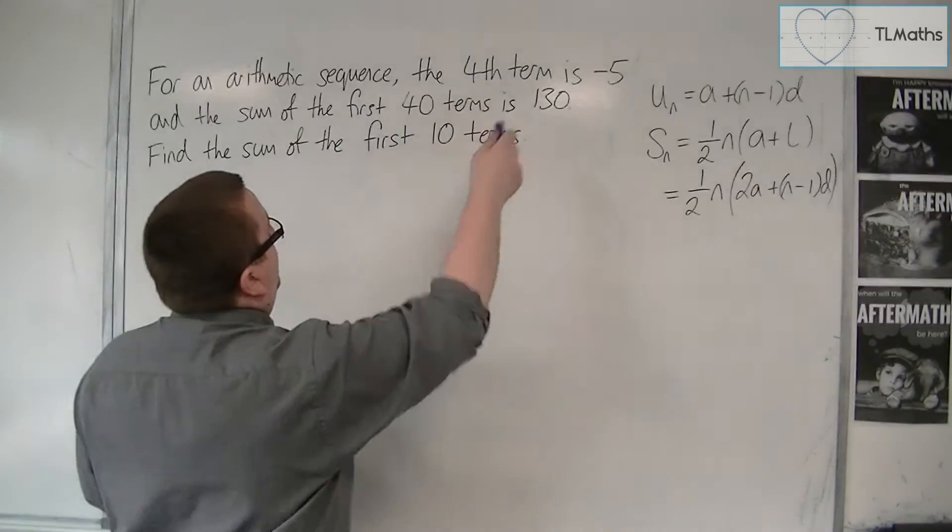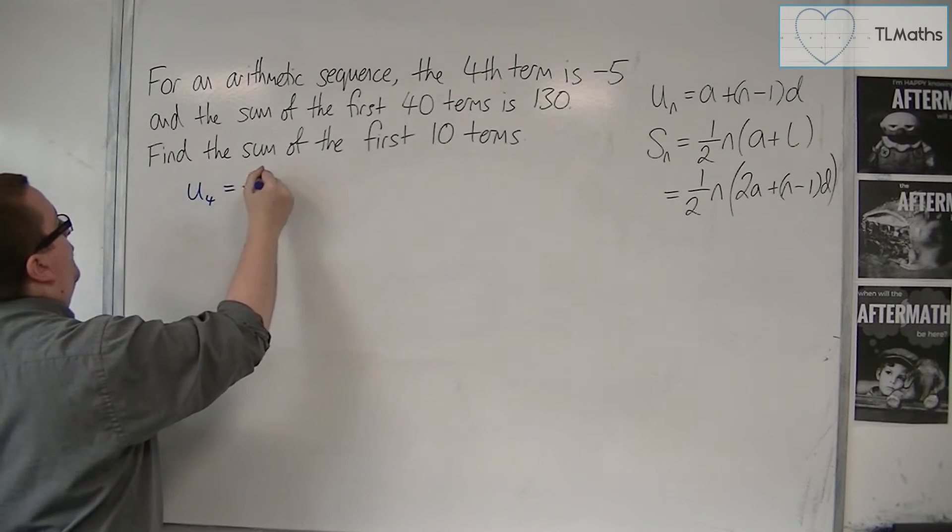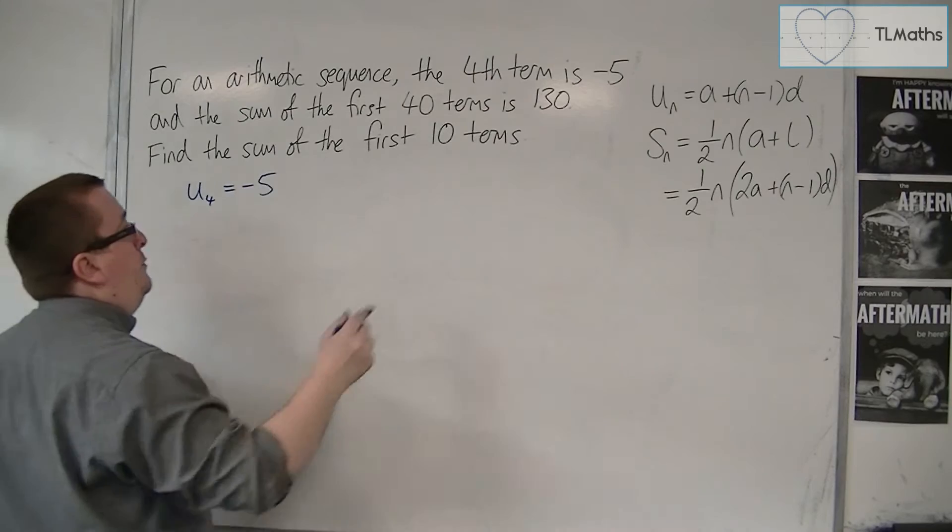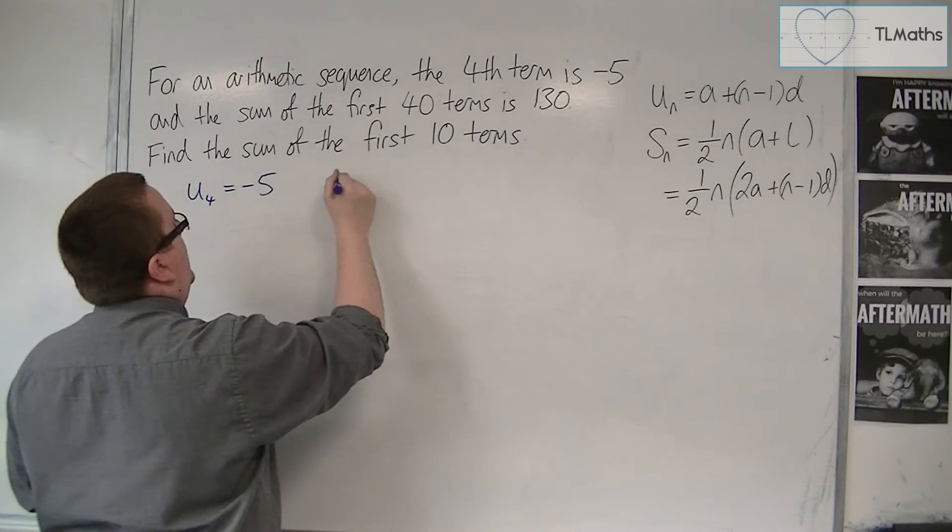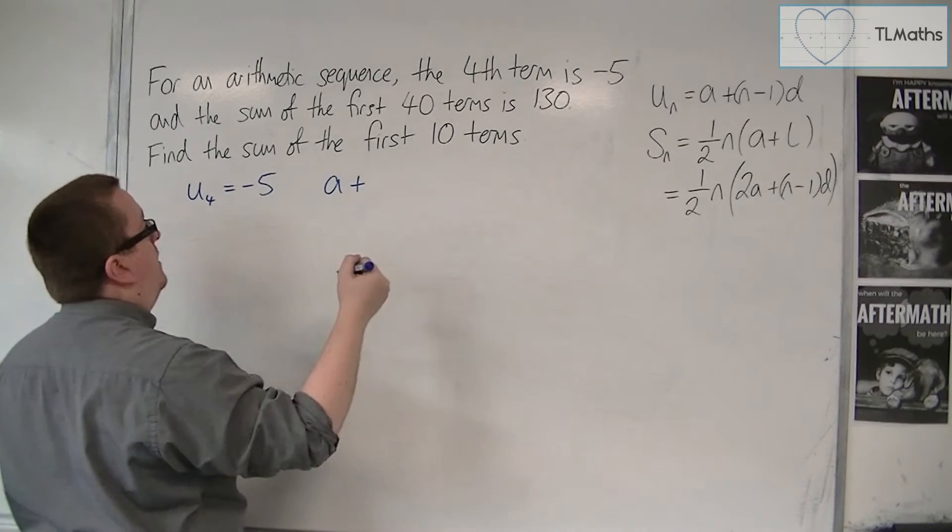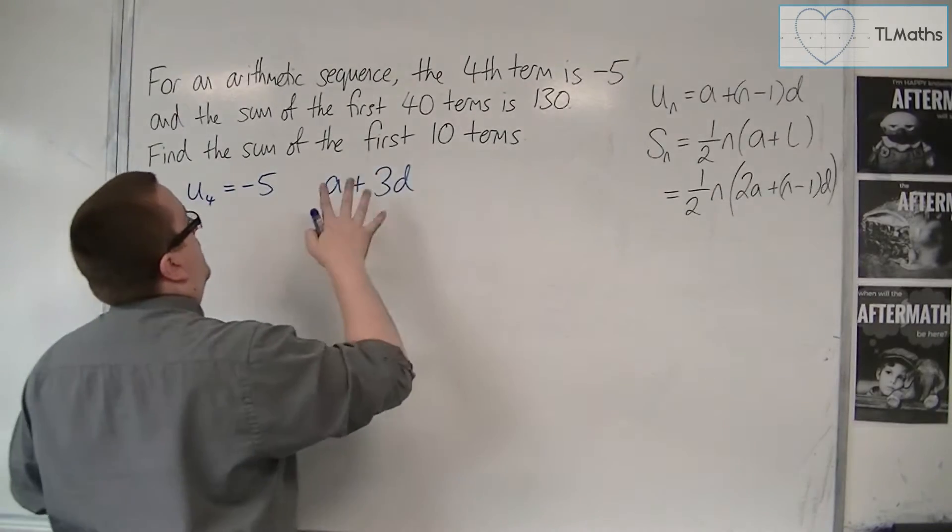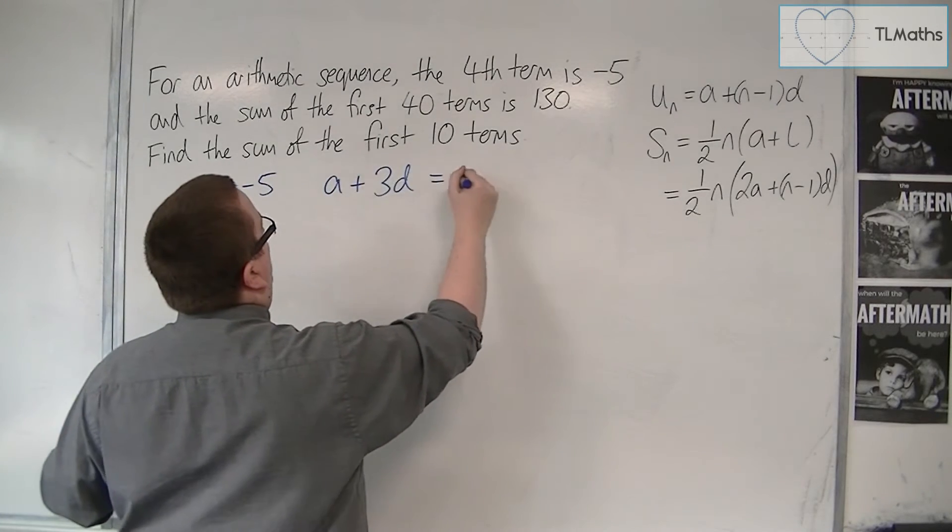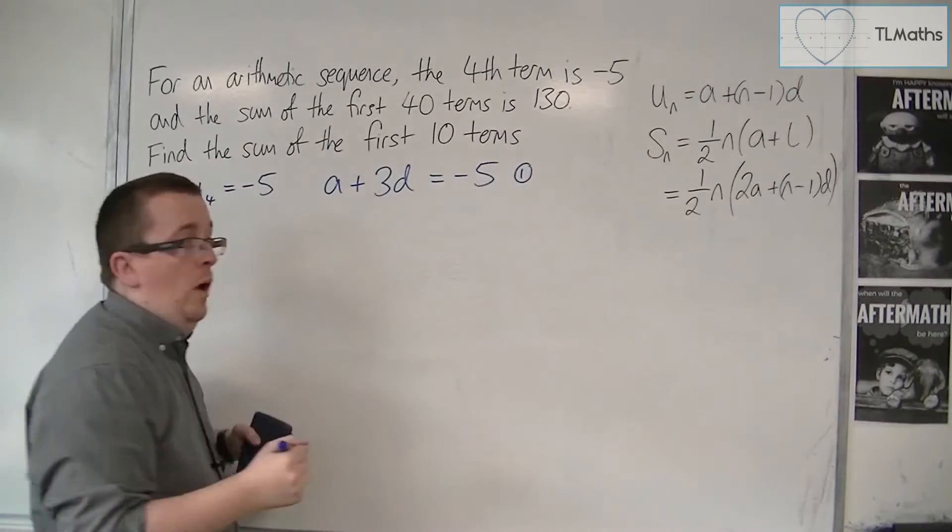So the fourth term is minus 5, so I can write down u4 is minus 5. And so using this formula here, that's telling me that a plus n minus 1, so 4 minus 1, so 3d, the fourth term must be equal to minus 5, and that will be equation number 1.